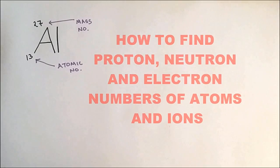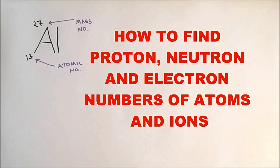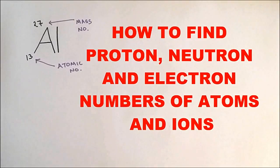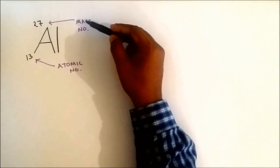Hi everyone, welcome to Science Tutorial For You. My name is Canty. In this video I'd like to tell you how to find protons, neutrons, and electrons numbers of atoms and ions. Okay, we have aluminum. The top number is called mass number and the bottom number is called atomic number.